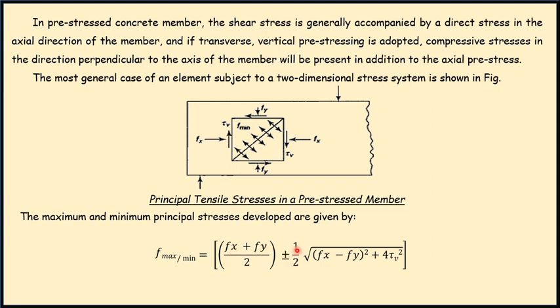Divided by 2 plus or minus half of square root of f x minus f y whole square plus 4 times tau v square. So this formula is nowhere new to us.